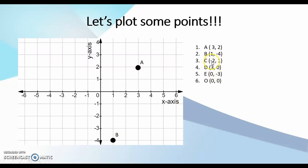My point C is at (-2, 1), which means I start at my origin and I move two units to the left, followed by one unit upwards. So C should lie here. D is the point (3, 0), which means I start at my origin and I move three units to the right, followed by no movement upwards or downwards. So my point D is actually right here.